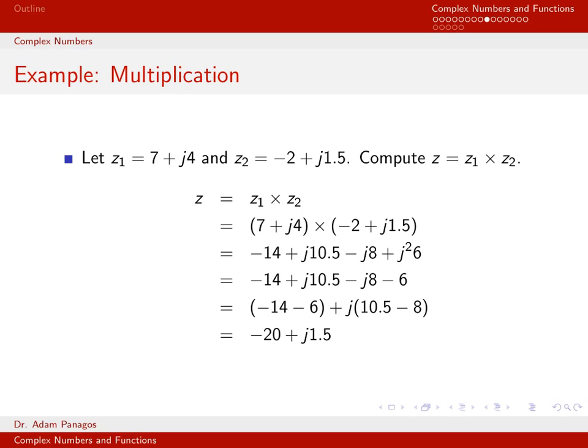Let's work with these same numbers z1 and z2, but do multiplication. We're going to compute the product z equal to z1 times z2. I start by writing down what z1 and z2 are equal to, and then we use the FOIL method, just like in algebra.